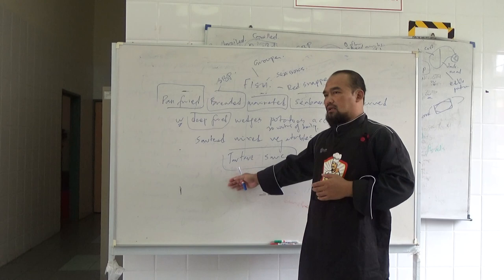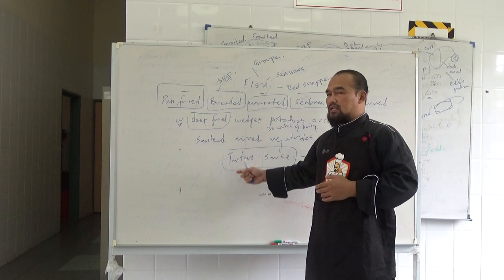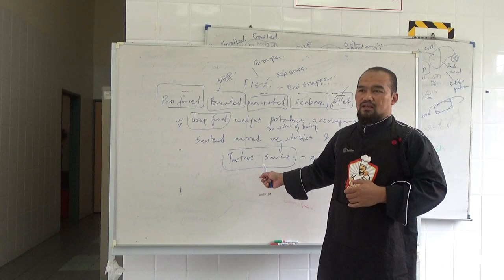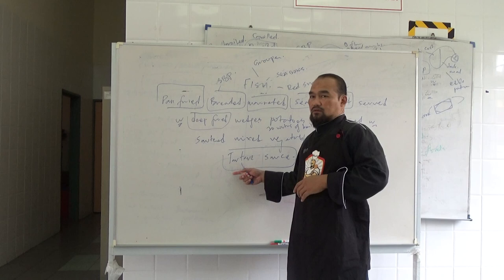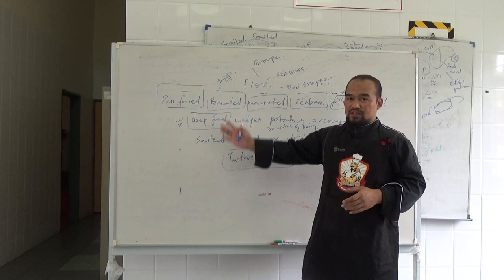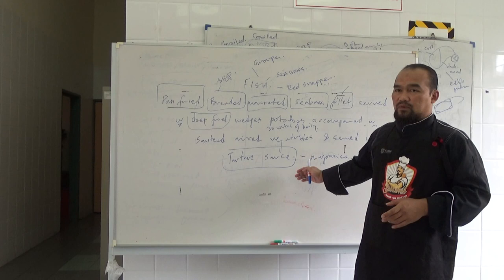What we need to have is chopped dill, and then we are going to have chopped onions, and then we are going to use chopped gherkins and chopped olive. Supposedly if we have capers it's better, but we don't have capers. So we use whatever that we have. Okay, so any question on this? So these are the menu that we are going to prepare.